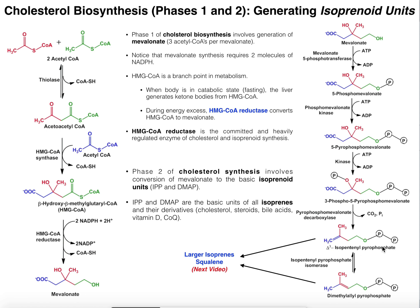IPP is one of the basic isoprenoid units. We can actually isomerize IPP into what's called dimethyl allyl pyrophosphate, or DMAPP — all it does is move the double bond over. So these are our two isoprenoid units, the two most basic ones. We can condense these in different patterns into larger isoprene units. Notice that each has five carbons, so if we combine two together we'll have a 10-carbon unit, which we'll see in the next video. This concludes phase two of cholesterol synthesis.